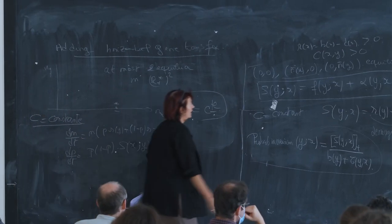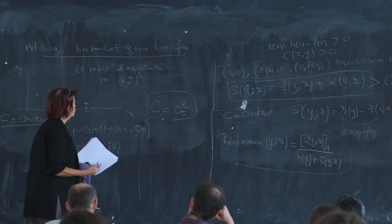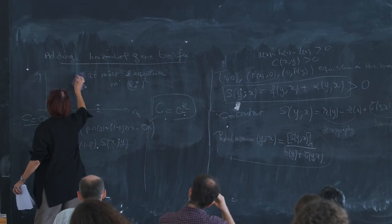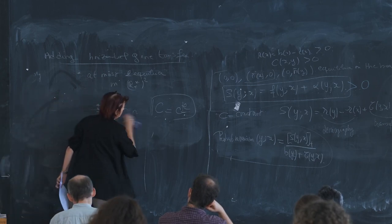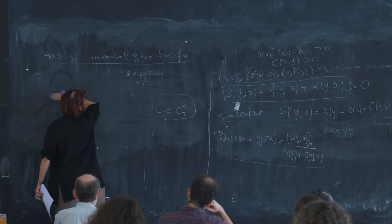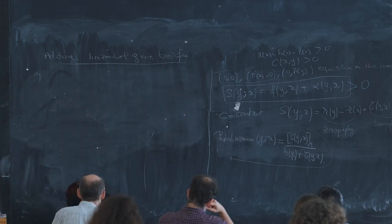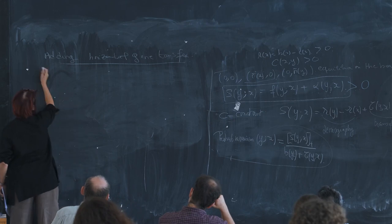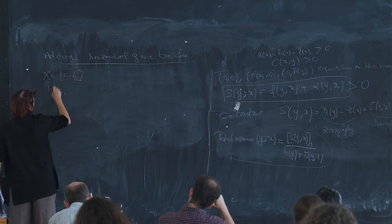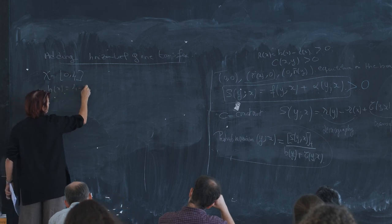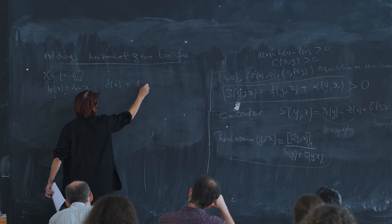After computing all this, we can obtain a theorem of convergence to a Trait Substitution Sequence exactly as we did without transfer. The jump measure for this TSS is related to the new fitness function where we have replaced f by the capital S — the invasion fitness including transfer. Now I would like to show you simulations on an example.